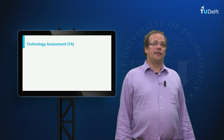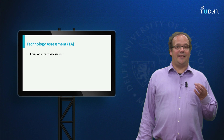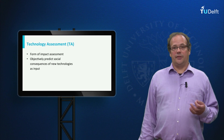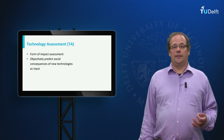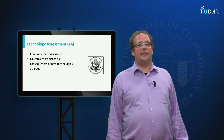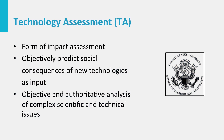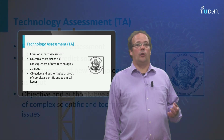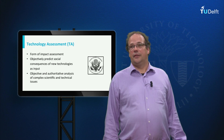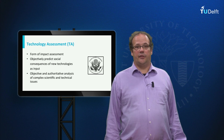Technology assessment is in a sense also a form of impact assessment and it may be described as an attempt to objectively predict social consequences of new technologies as an input for policy making by the government. In the United States, the Office of Technology Assessment was established in 1972 and existed until 1995. Its purpose was to provide Congress with objective analysis of complex scientific and technical issues. Although the American Office of Technology Assessment has been disbanded, several countries still have an Office of Technology Assessment.